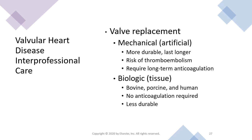Valve replacement may be needed for mitral or aortic valves. Desirable prosthetic valves are non-thrombogenic, durable, and create minimal stenosis. Valves are either mechanical or biological. Mechanical valves are made from artificial materials, consisting of combinations of metal alloys, pyrolytic carbon, and dacron. Biological valves are tissue valves made from bovine, porcine, and human cadaver heart tissue.